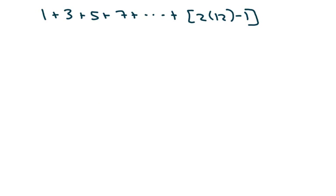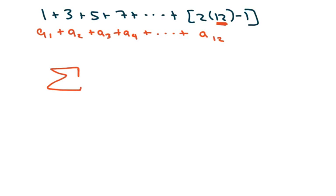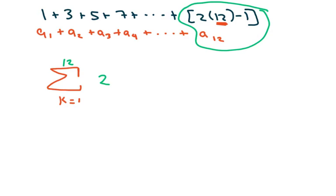We have a(1) + a(2) + a(3) + a(4) + ... + a(12). We're starting with k equals 1 and going to 12. Looking at this last term, we're going to write 2k minus 1. I change the 12 to a k. If you plug the numbers back in and try it, you'll see that that works, because these are your little k's.